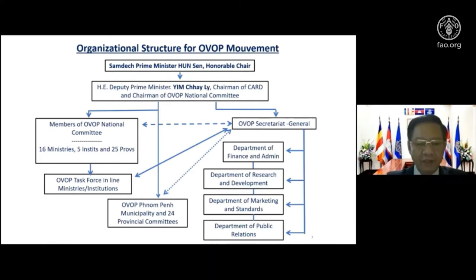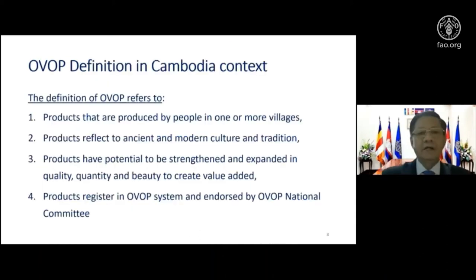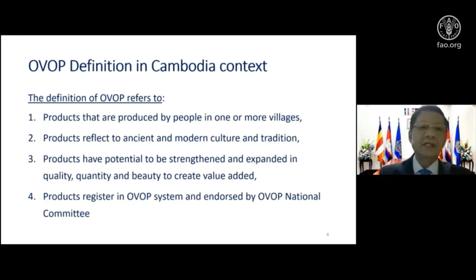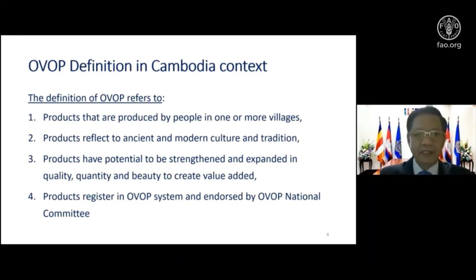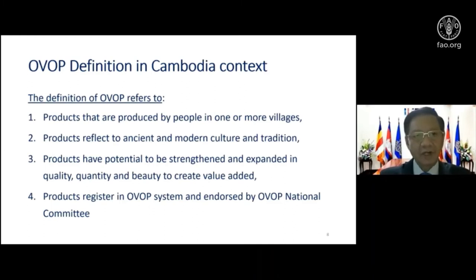At the provincial level, Cambodia has one municipality and 24 provinces, all of which have an OVOP Committee. Regarding product definition, one village does not necessarily mean one product — it could be two, three, four, or five villages producing a unique product together. Second, the product must reflect ancient or modern culture. Third, the product must be possible to strengthen and expand in quality to create added value. Finally, to be called an OVOP product, it must be registered in the OVOP system and endorsed by the OVOP National Committee.